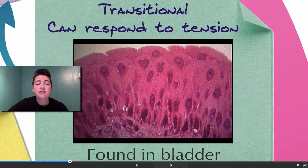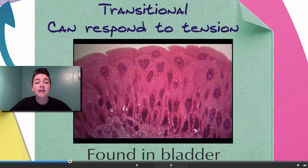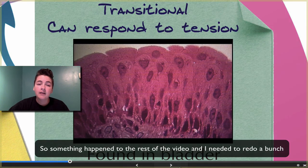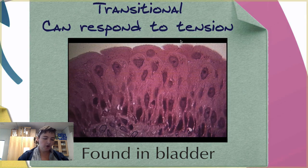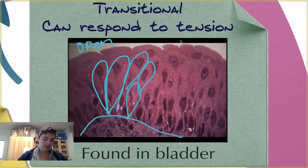Transitional epithelium responds to tension — it can stretch out, and as it gets stretched, those cells spread out and flatten while maintaining their integrity, meaning they don't allow anything to come through. These are found in the bladder. Transitional has many layers of cells, and the instructor notes it looks like orange pulp. Here is the open space and here is the basement membrane.